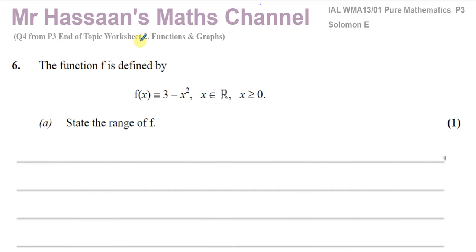This question tells us about function f, which is defined by f(x) = 3 - x². They've told us that the domain is restricted to all real numbers where x must be greater than or equal to zero. So the domain has been limited to x ≥ 0.